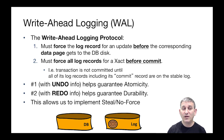Second, and equally importantly, we must force all log records for a transaction before we return a commit to the user. The transaction doesn't even count as committed until all of its log records, including its commit log record, are on the stable log — they're forced to the log device. The first of these properties, with undo information, guarantees atomicity. The second of these properties, with redo information, guarantees durability. And by doing this write-ahead logging protocol with both its parts, we can implement a steal no-force policy.